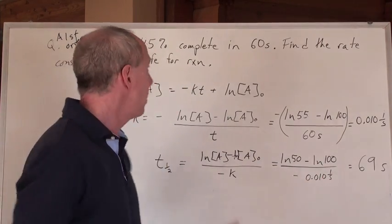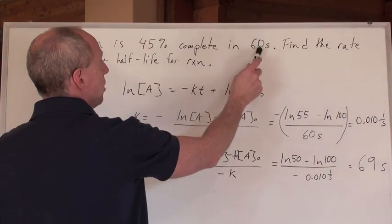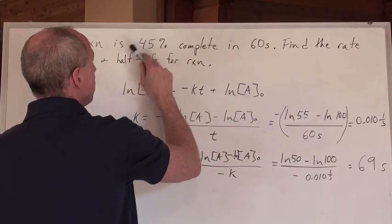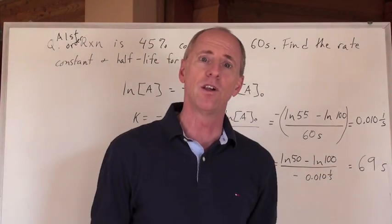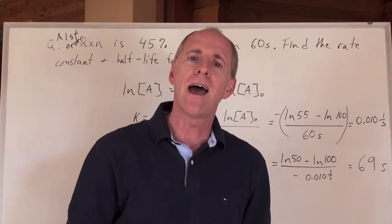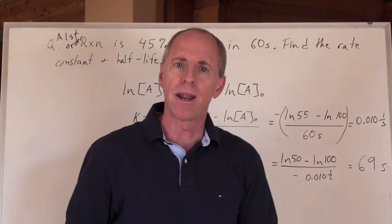Now, does that make sense? Well yeah, because to get to 45% completion, it took 60 seconds. So another 5% to get to 50% is probably going to be around 69 seconds. That's beautiful. Don't memorize those rotten half-life formulas. Just use your brain.